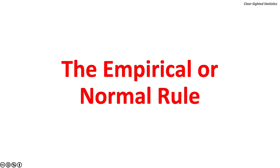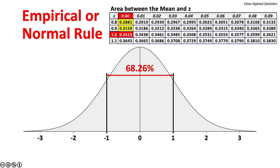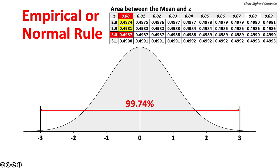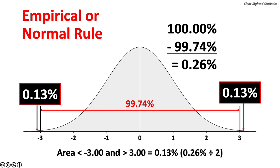Let's turn to the empirical or normal rule with z-values. The area between a z-value of negative 1.00 and positive 1.00 represents 68.26% of the normal curve, found by 0.3413 times 2. The area between negative 2.00 and positive 2.00 represents 95.44%, found by 0.4772 times 2. The area between negative 3.00 and positive 3.00 represents 99.74% of the normal curve, found by 0.4987 times 2. The area above or below a z-value of negative 3.00 represents 0.13% of the normal curve, found by 100% minus 99.74% divided by 2.